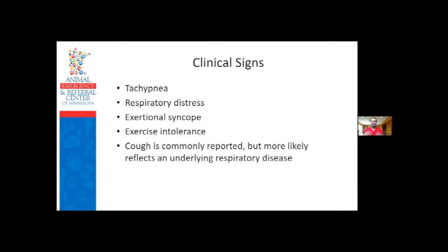Clinical signs are really lung signs - anywhere from a little shortness of breath to full respiratory distress, syncope especially from exertion or excitement, tiring quicker with activity, and cough is commonly reported. But the cough is usually from the primary underlying lung disease - pulmonary hypertension itself does not really cause cough. So if a dog has pulmonary hypertension, treating that without addressing the underlying cause may not actually help that dog's cough.